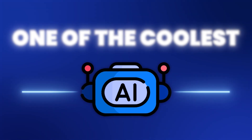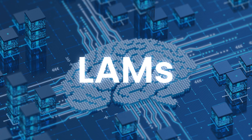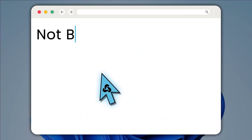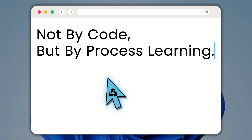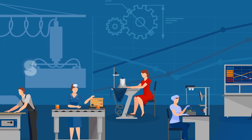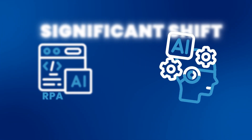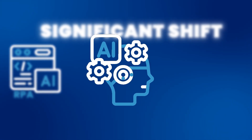Hello everybody, welcome to today's tutorial where I'm going to be walking you through one of the coolest AI breakthroughs I have ever seen. This is MultiOn and it is an AI agent that acts on your behalf. Large action models are really becoming trendy these days because you're not just dealing with a ChatGPT chatbot anymore. This would actually be able to take over your screen and do processes not by code but just by process learning. This advancement is seen as a significant shift from traditional robotic process automation, known as RPA, towards a more intuitive generative AI experience.